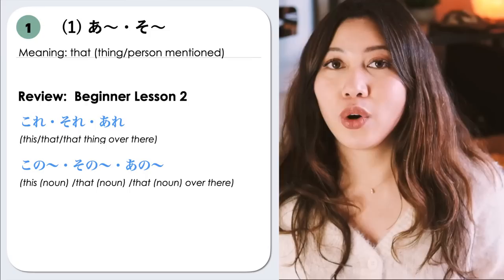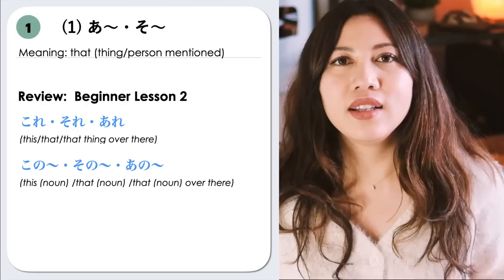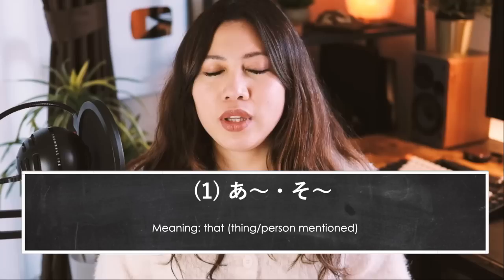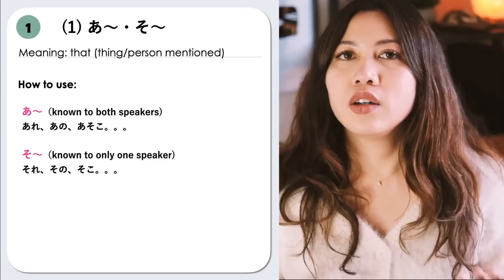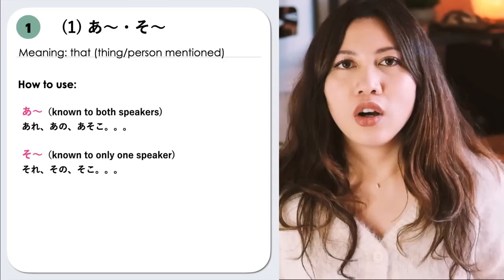So kore means 'this', sore means 'that', and are means 'that thing over there'. We also learned kono followed by a noun, and sono and ano followed by a noun. In this lesson, we will learn the difference between using the prefix A versus So as a demonstrative pronoun. We use the prefix A when the noun is both known to the speakers — so we can use are, ano, asoko, and so on.